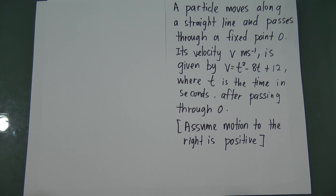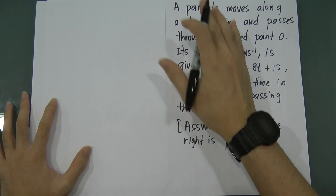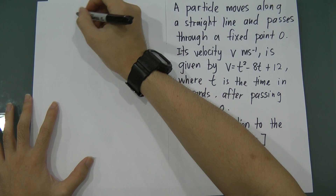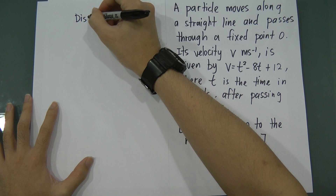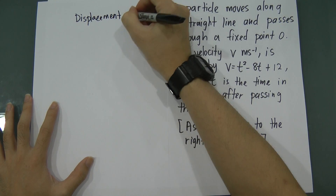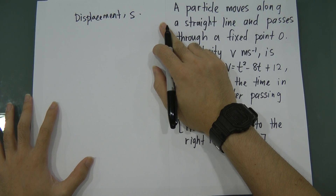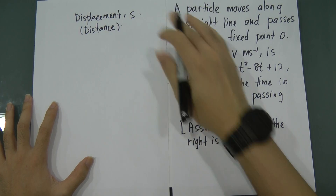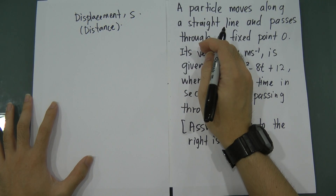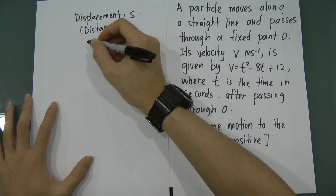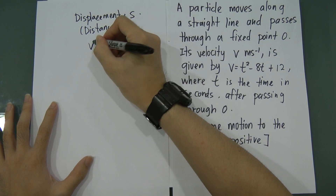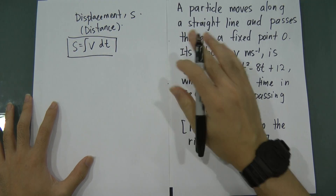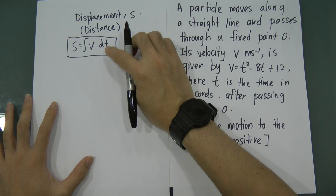First, let me give you something for sure. Displacement, which we call 's', is highly related to distance. So whenever the question asks you to find distance, you know you have to find 's'. If the question gives you velocity, we know that s equals the integral of velocity dt.